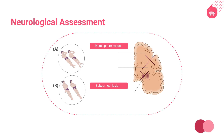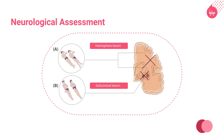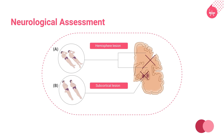Motor responses are elicited by applying pressure to the superorbital ridge, nail beds, and sternum. The human representative illustrates flexion to pain, with one figure illustrating flexion with the left hand with either extension, and another illustrating flexion with the right and hyperextension in both lower limbs.